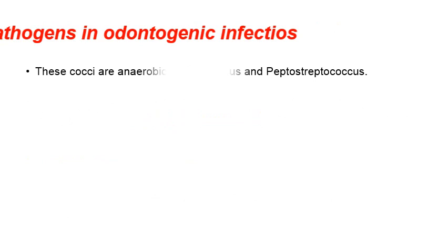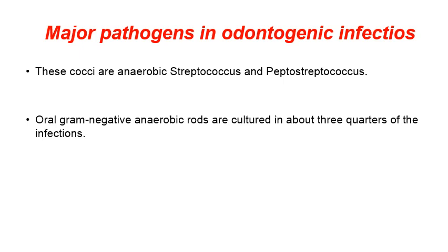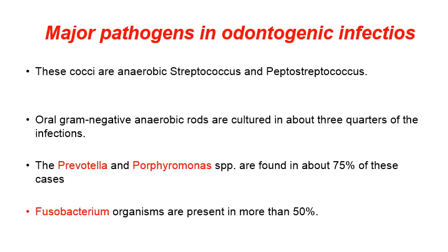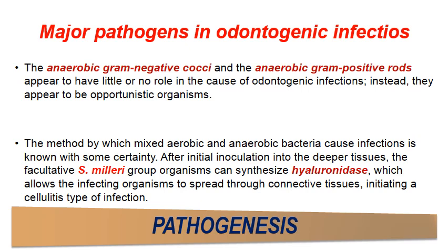We also have anaerobic Streptococcus and Peptostreptococcus. Oral gram-negative anaerobic rods are cultured in about three-quarters of cases. Prevotella and Porphyromonas are found in about 75% of cases. Fusobacterium is present in more than 50%. The anaerobic gram-negative cocci and anaerobic gram-positive rods appear to have little or no role in initiating odontogenic infection; however, they are considered opportunistic organisms.